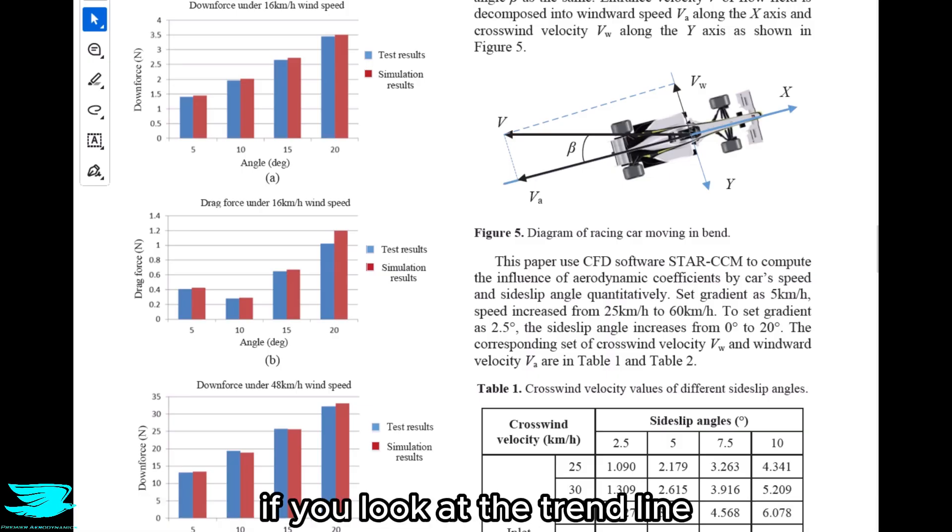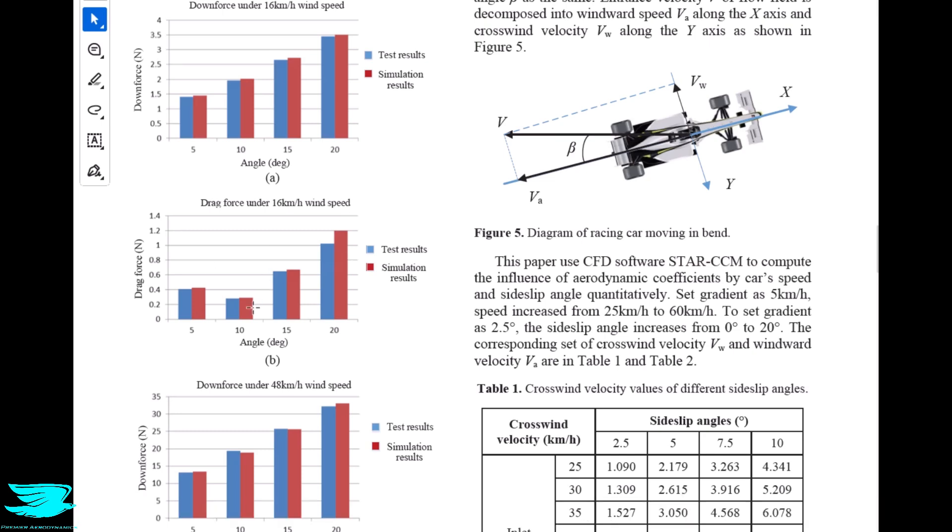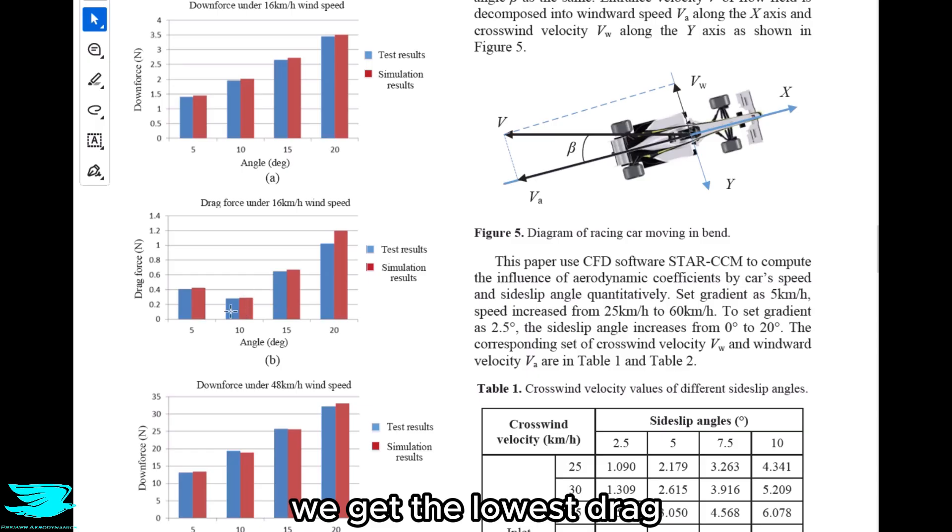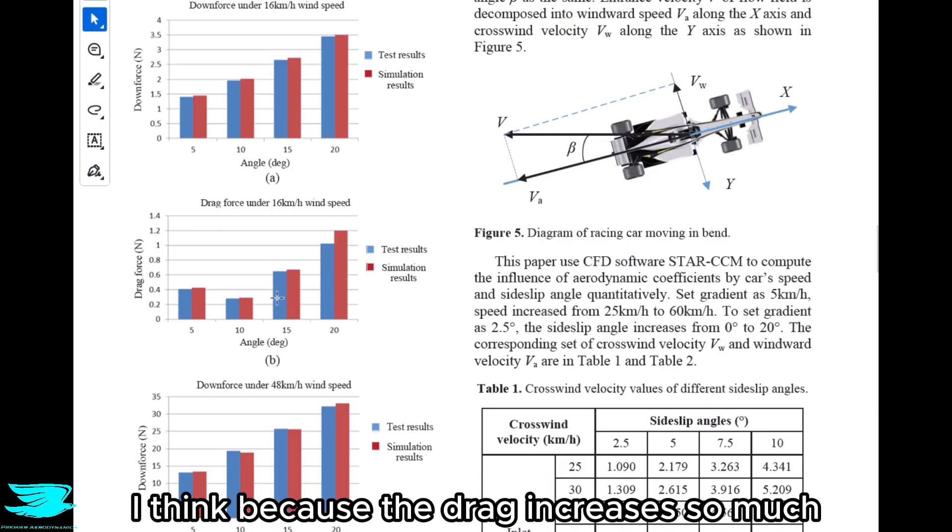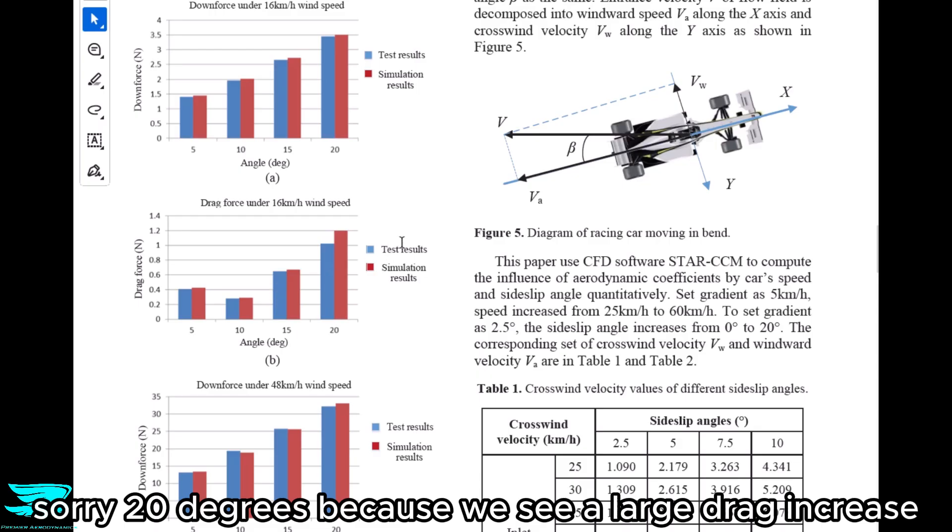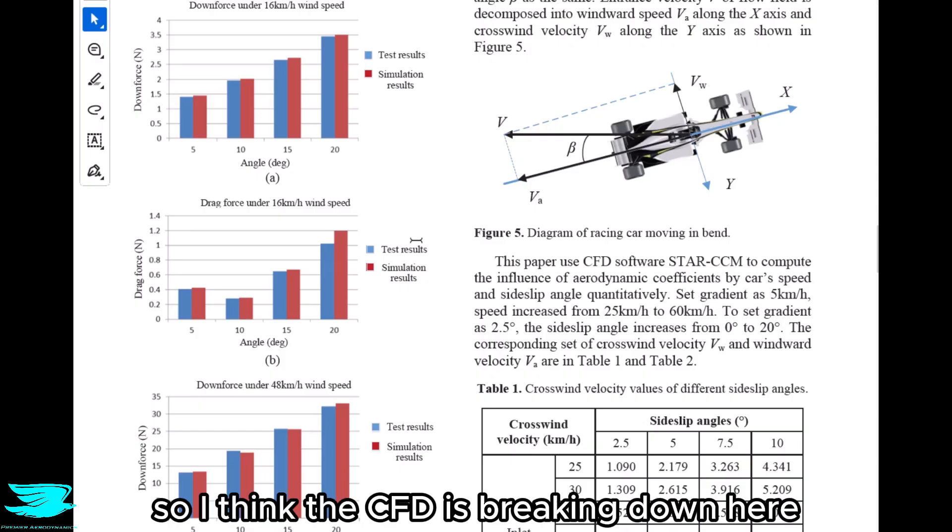The reason I say that is if you look at the trend line for the drag prediction, so this second graph here, there is a drag bucket forming. At 10 degrees we get the lowest drag and then it increases either side of that. At 15 degrees we're getting a little bit of separation I think, because the drag increases so much, so some of the airfoil surface should be seeing separated flow and hence greater pressure drag at 20 degrees. Because we see a large drag increase, we can be pretty confident that we're reaching proper stall and even deep stall. So I think the CFD is breaking down here.